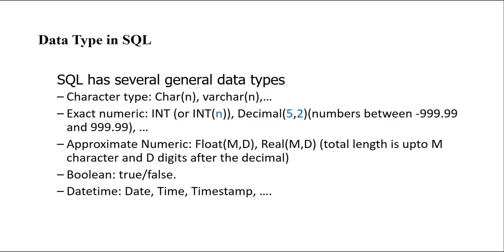For numeric values — for example the price of items or the distance between two cities — we have two types of numbers: exact versus approximate. In exact numbers, all numbers have the same structure and precision. In approximate numbers (floating point), the precision is not exactly the same for all rows in the column.